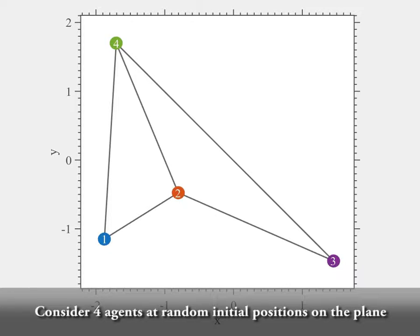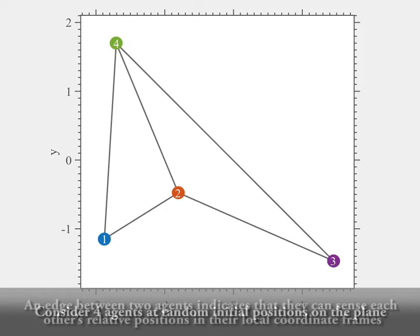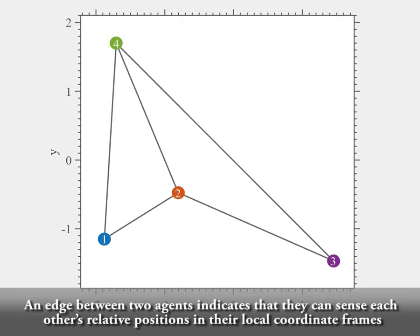Consider four agents at random initial positions on the plane. An edge between two agents indicates that they can sense each other's relative positions in their local coordinate frames.